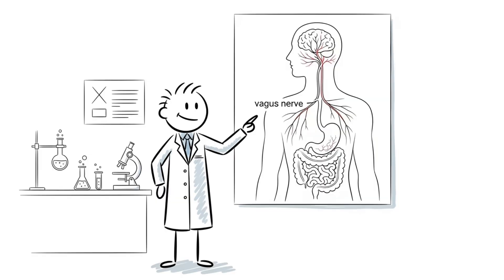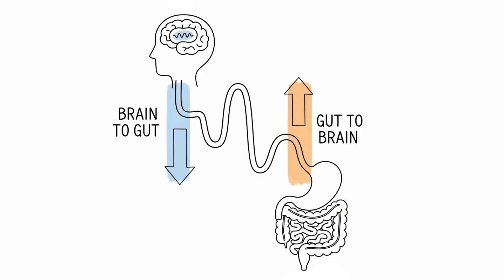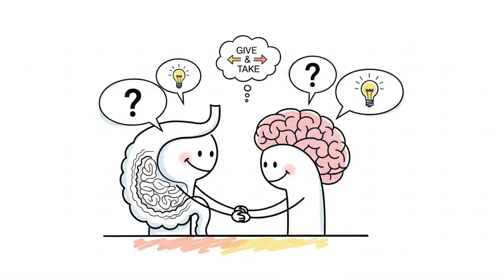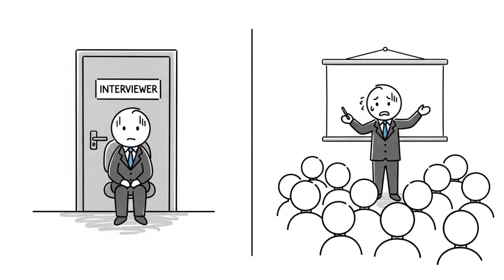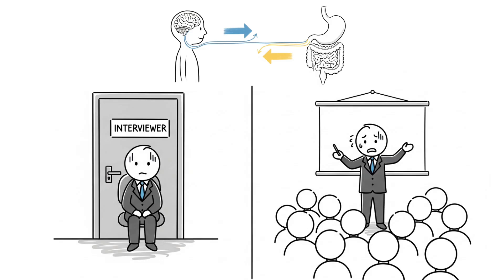This second brain has a direct line to your brain through the vagus nerve, a two-way conversation running constantly. But here's the thing. Your gut doesn't take orders. It negotiates. When you're nervous before something important, and that nauseating feeling you get in your stomach, that's both brains talking to each other in real time, translating stress into sensation.